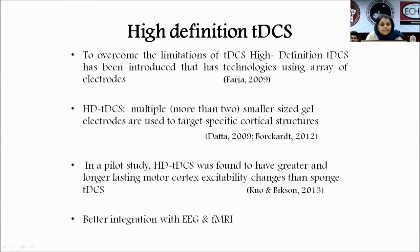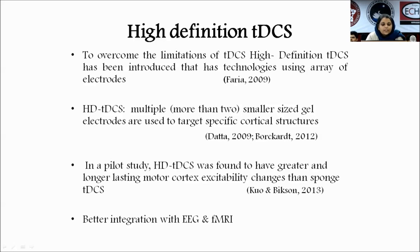To overcome the limitation of target specificity, high-definition tDCS has been introduced. More than two smaller-sized gel electrodes are used to target specific cortical structures. In a pilot study, it was found to have greater long-lasting motor cortex excitability changes than usual sponge tDCS. If better integrated with EEG and fMRI, it will be more target-specific and give better results.